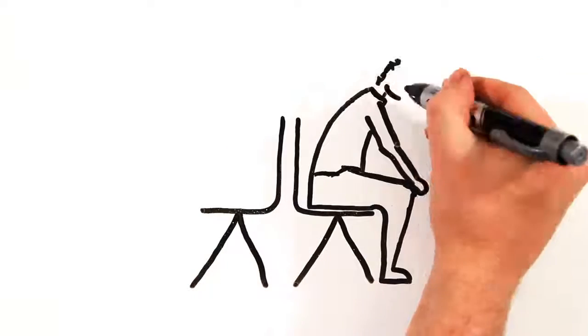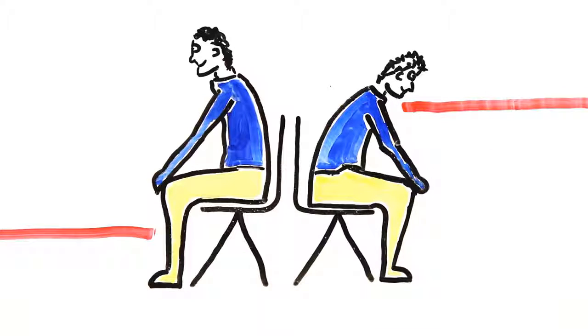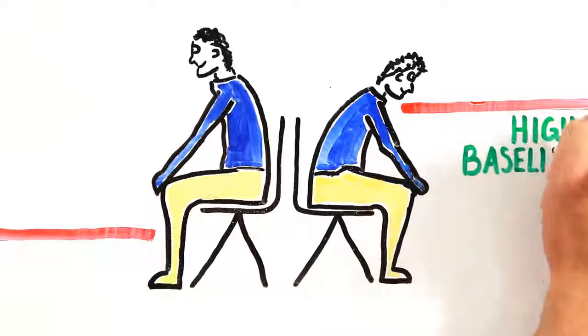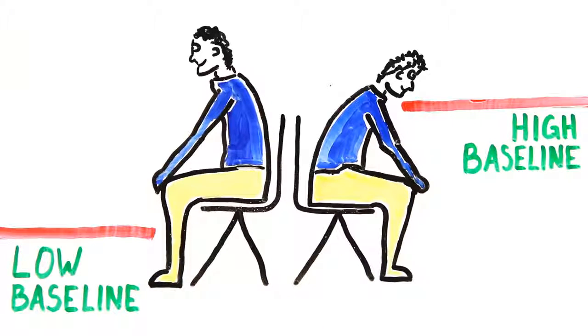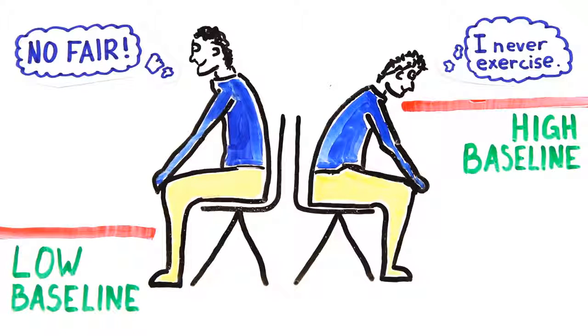But even before training, scientists noticed something else. Individuals all had different baseline endurance levels as well. Without any training, some individuals were simply more fit than others. It turns out, a different set of genes gives some people a higher baseline.